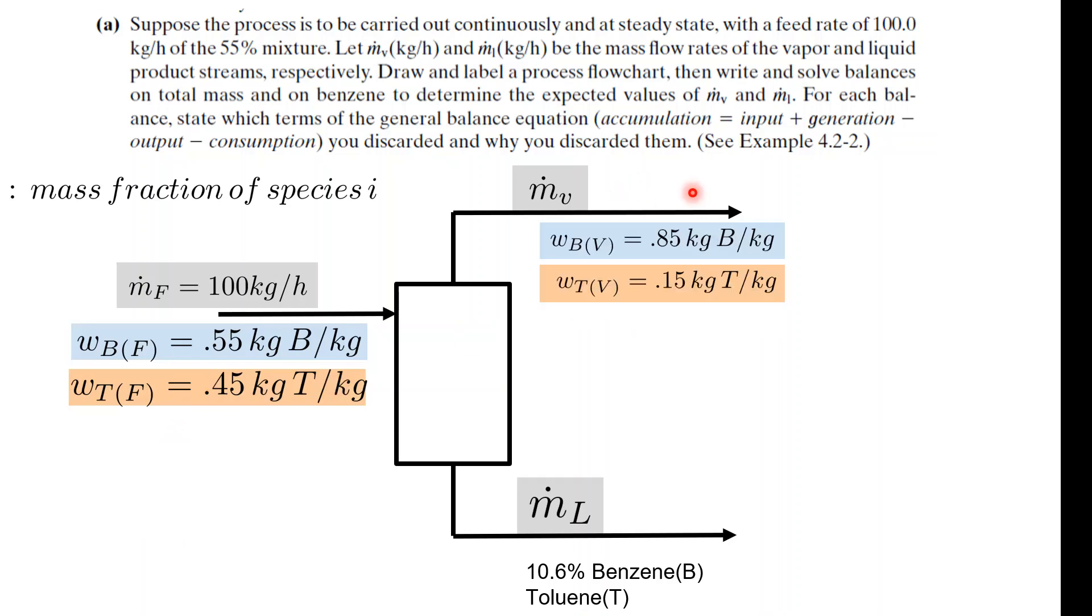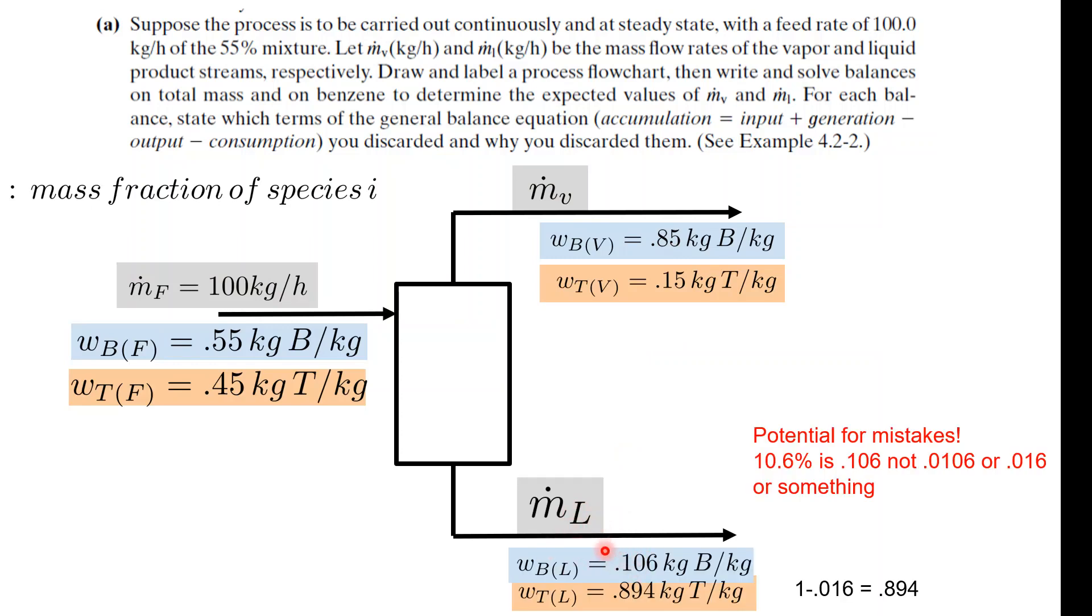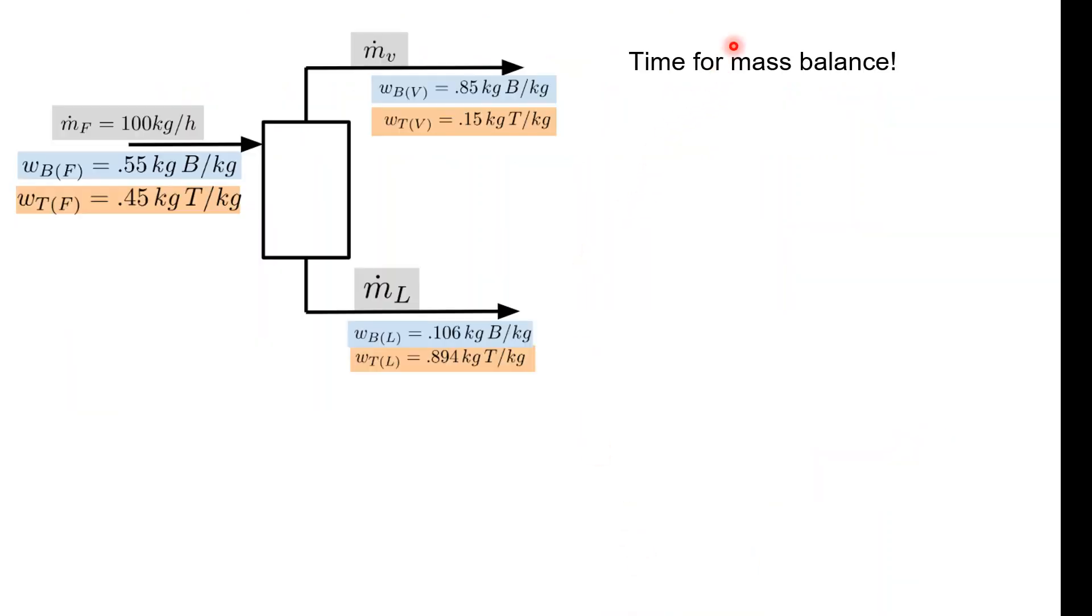The benzene in the vapor is gonna be 85% and the toluene in the vapor is 15%, kilograms of the components with respect to the kilograms of the stream. This is the inlet and this is the overhead. Now the bottoms, the liquid phase, again same thing. Now careful, this is where you might begin to make some mistakes such as what I might have done back in the day - write something like 0.106. One minus 0.106 is 0.894, so that's where this balance is. Just be careful of those little things - these numbers matter.